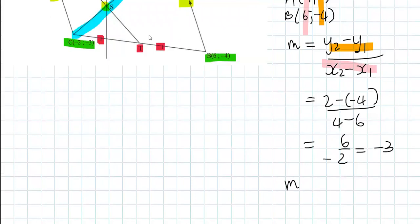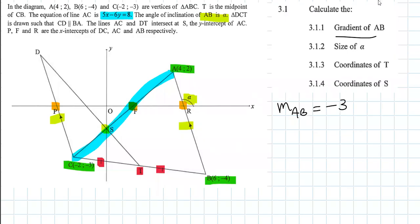So the gradient of the line AB is negative 3. Question 3.1.2 wants the size of alpha. Alpha is the angle of inclination of AB, and we know that angles of inclination are given by tan theta equals M.